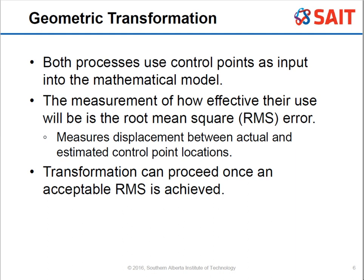There's actually a five-step process. Step one: collect your ground control points. Step two: calculate the transformation equation, which allows you to calculate the RMS value. Step three: iterate your ground control points and recalculate the transformation equation to reduce the RMS value. Step four: resampling — converting all rows and pixels to the correct location for display. Step five: evaluate the result.